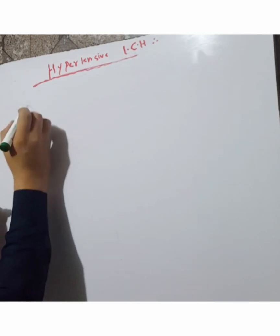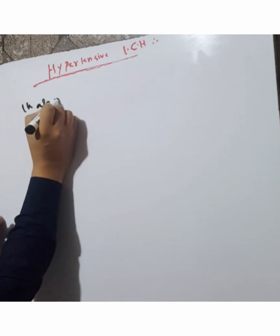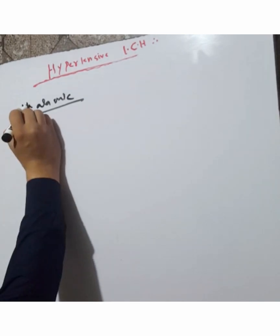What is thalamic hemorrhage? Thalamic hemorrhage is a type of intracranial hemorrhage where bleeding occurs in the thalamus.